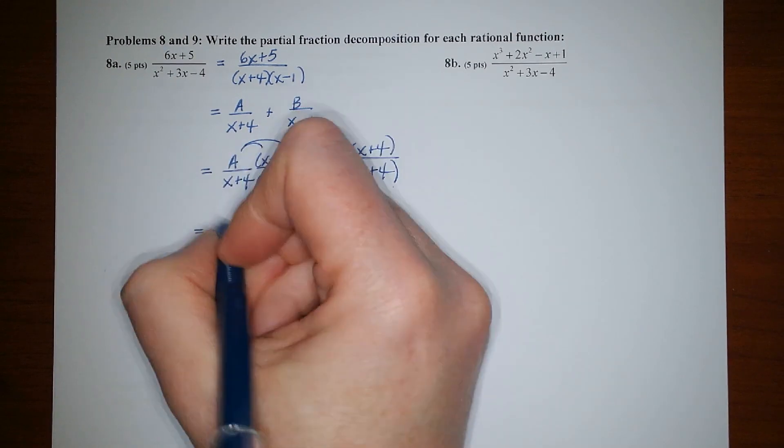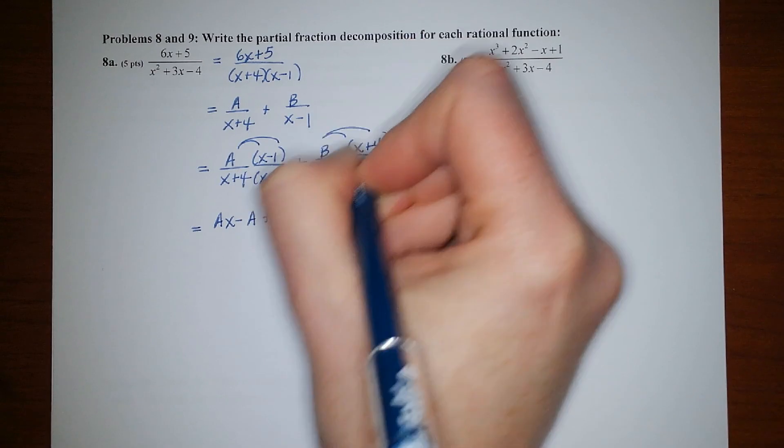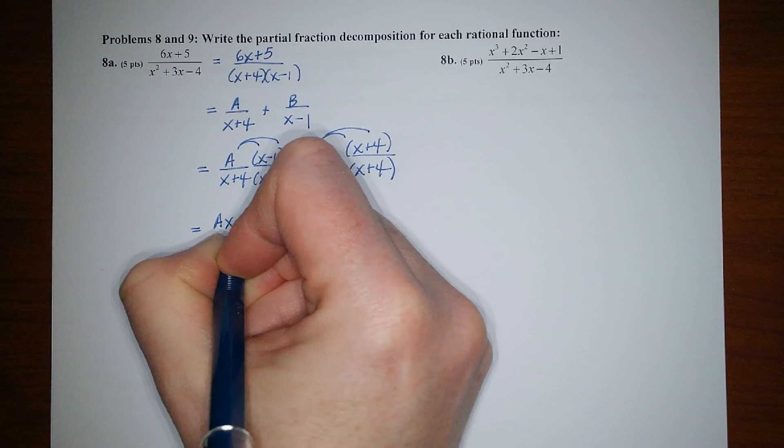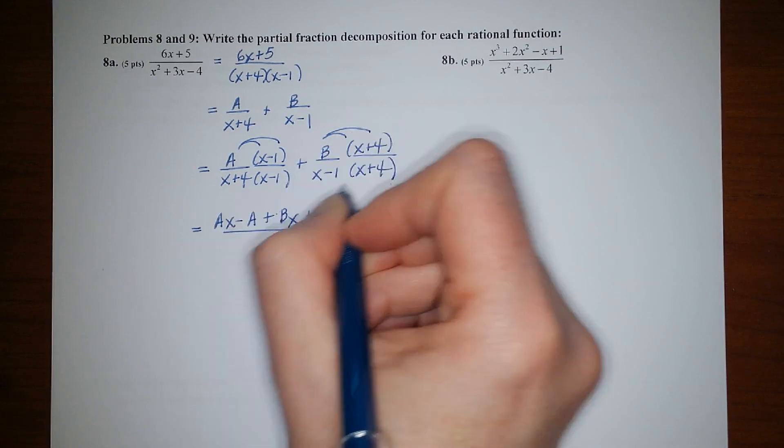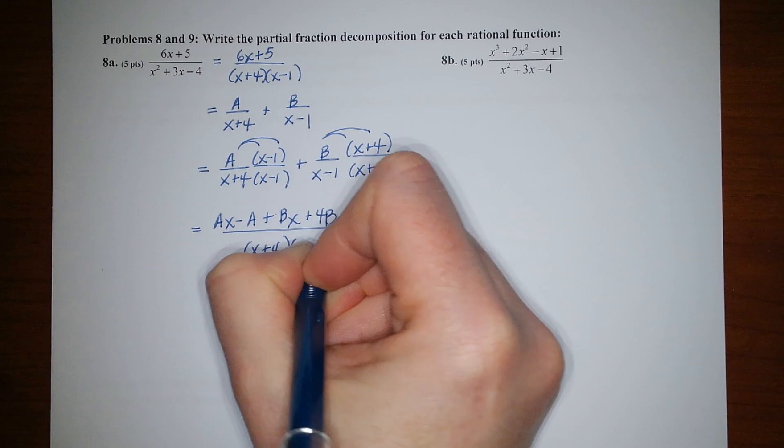Then I'm just going to go ahead and simplify the top. So I'd have Ax minus A plus Bx plus 4B over, and then the denominator would be just x plus 4 times x minus 1. Okay.